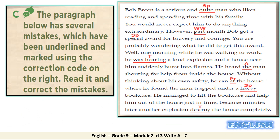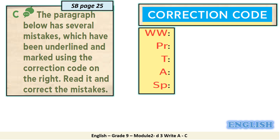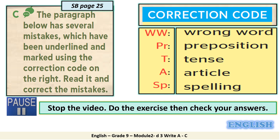See the paragraph below which has several mistakes, which have been underlined and marked using the correction code on the right. Read it and correct the mistakes. The correction code: WW stands for wrong word. PR for preposition. T for tense. A for article. SP for spelling. Now you can stop the video, do the exercise, then check your answers.